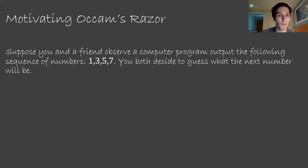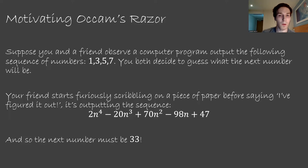Your friend starts furiously scribbling away on a piece of paper, and after a few minutes he says, I've figured it out. It's outputting the numbers in the sequence 2n^4 - 20n^3 + 70n^2 - 98n + 47. And so the next number must be 33.